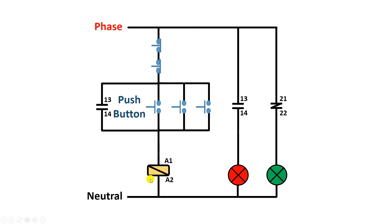When your contactor turns on, the red indication lamp will glow, and when the contactor turns off, the green indication lamp will glow. I hope you liked this video. If you liked it, give it a like. If you are new to the channel, subscribe. Thanks for watching.